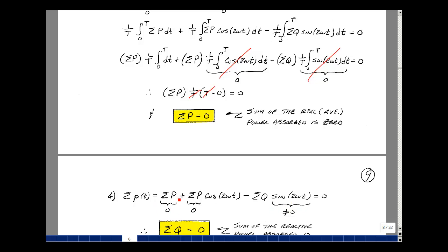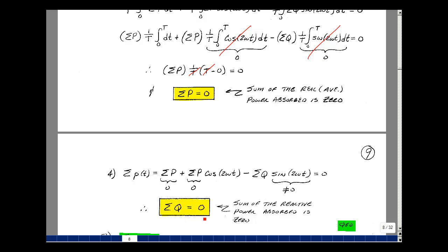I've just shown that the summation of P is equal to zero. So I've got zero here plus zero times the cosine. And then here I've got a term that's multiplying the sine of omega t, and it has to equal zero. Well, since the sine is not identically zero, then this term here must be equal to zero. And so the summation of the reactive power is equal to zero.